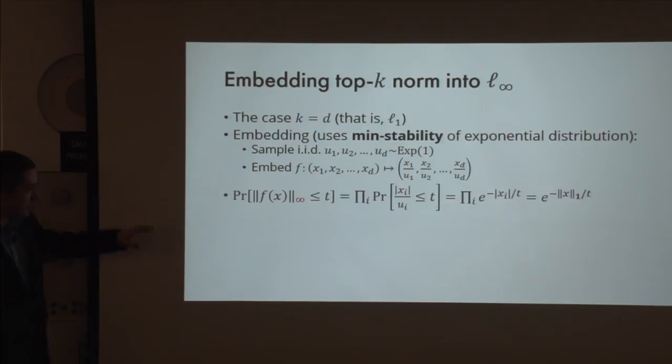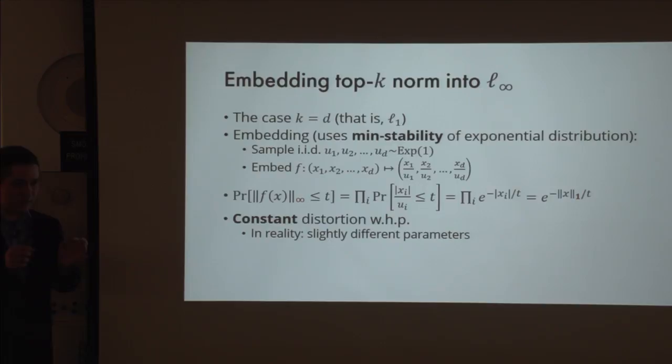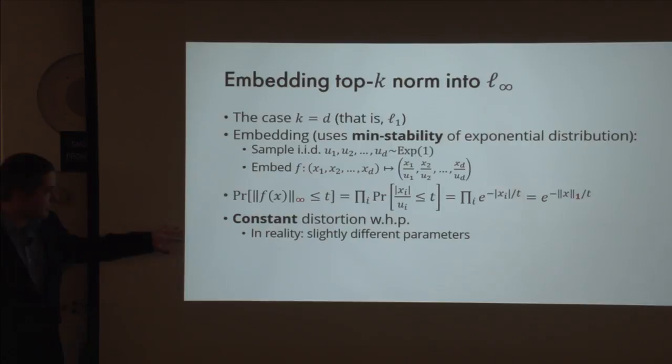In practice we want a lopsided guarantee: we don't want to expand distances at all but we are fine contracting them from time to time. Pretty much the same construction works, just instantiated with slightly different parameters. For every fixed query, the probability over constructing the data structure that it would work is at least about 90%.